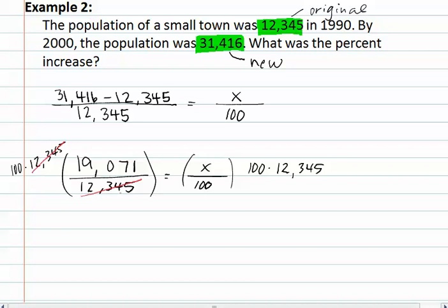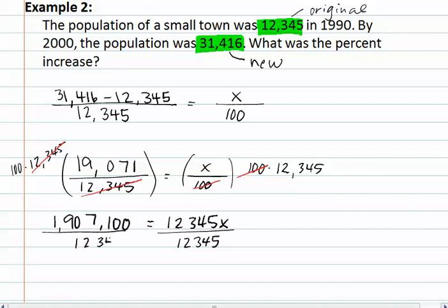This allows us to reduce out the 12,345 on the first side and the 100 on the second side. Multiplying, we now get 1,907,100 equals 12,345x. We divide both sides by 12,345, and we get 154.48 percent for our increase.